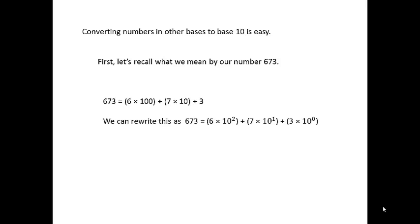Well, 100 is 10 squared, so we can write this as 673 = 6×10² + 7×10¹ + 3×10⁰. 10 to the 0 is 1.